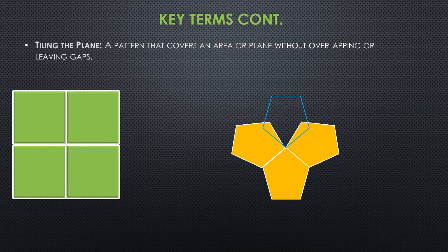Let's look at some key terms. The first one is tiling a plane — a pattern that covers an area or plane without overlapping or leaving gaps is called tiling. When I put these squares together — 1, 2, 3, 4 — I was able to tile the plane because they fit together nicely. I could keep going and adding pieces, extending it as much as I'd like — that is simply tiling the plane.